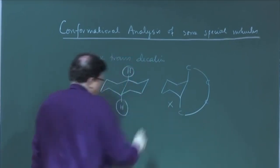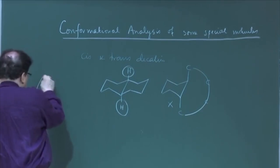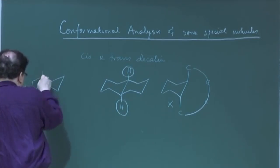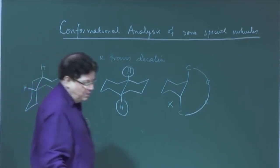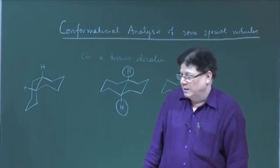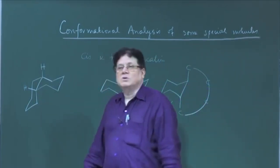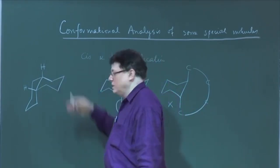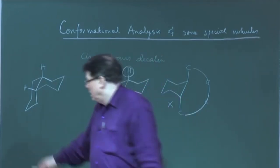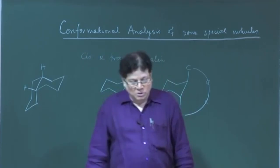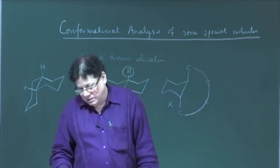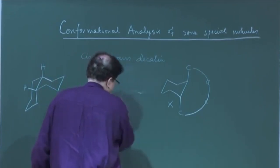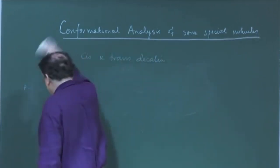That is why flipping is not allowed in trans-decaline. Whereas in the cis decaline system you have flexibility and it can flip to a mirror image chair form — similar to cis-1,2-dimethylcyclohexane — making it a non-resolvable DL pair. We also saw the energy difference: there are three additional gauche-butane interactions in this system, making it unstable by about 2.7 kilocalories per mole. We can work out problems on bicyclic cyclohexanes like decalines later.